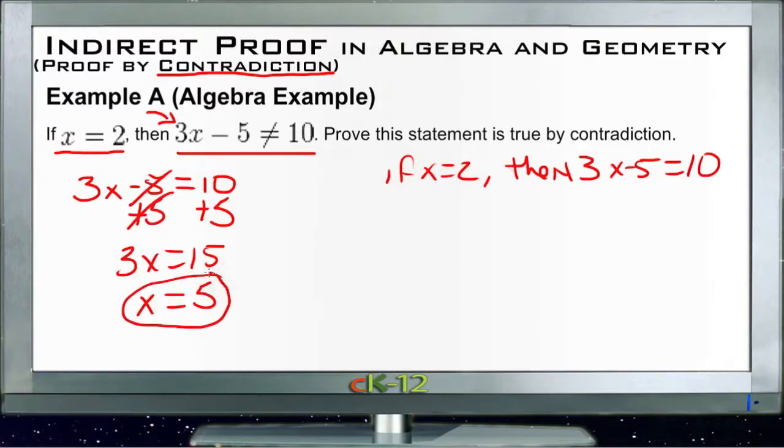And divide both sides by 3, we get x equals 5. So since x equals 5, x can't possibly equal 2. That's a contradiction. So if saying that it's not equal to 10 is our original statement, and we've shown that saying that it is equal to 10 can't be true, then we're showing that our original statement must be correct. If x equals 2, then 3x minus 5 can't be 10 because x would have to be 5 in order for 3x minus 5 to be 10. So that original statement then is true, and we've proven it.